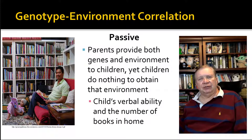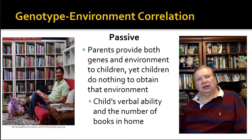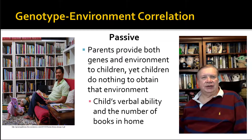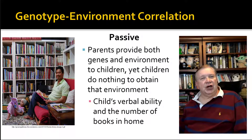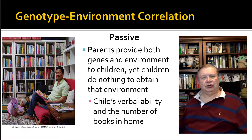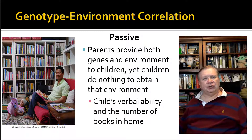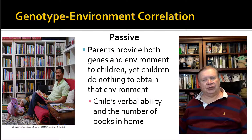Passive genotype-environment correlations: in passive GE correlations, parents provide both the genes and the environment to the children, but the children do nothing to get that environment. The stereotypical example is that a child's verbal ability is usually related to the number of books in a household.